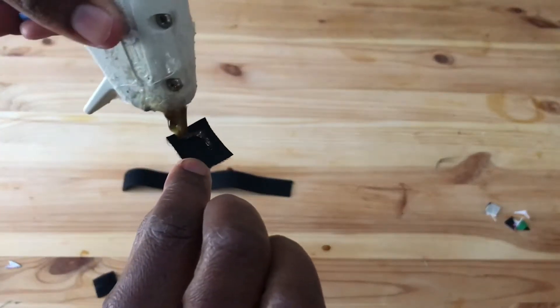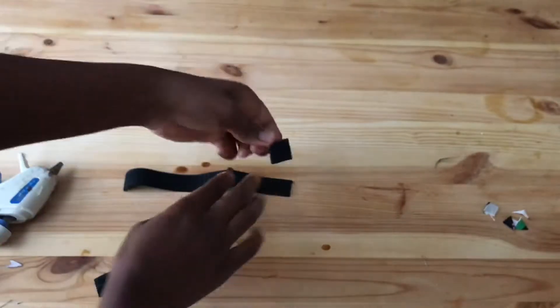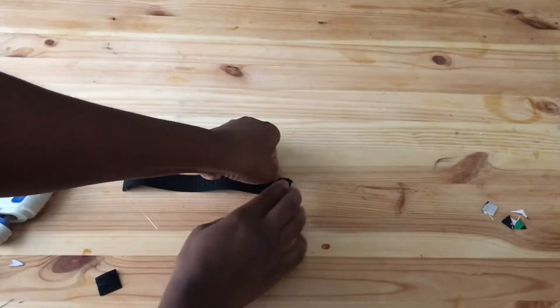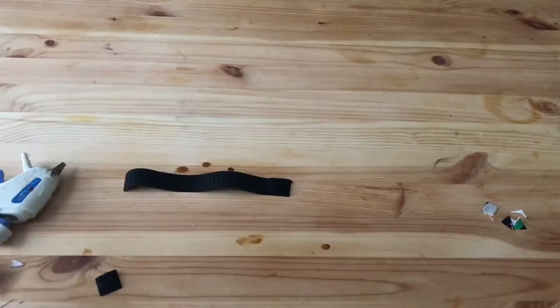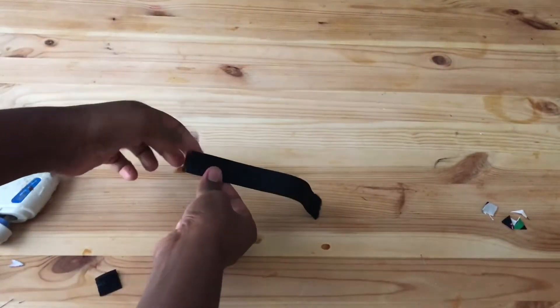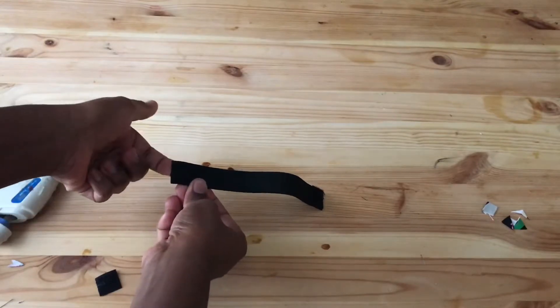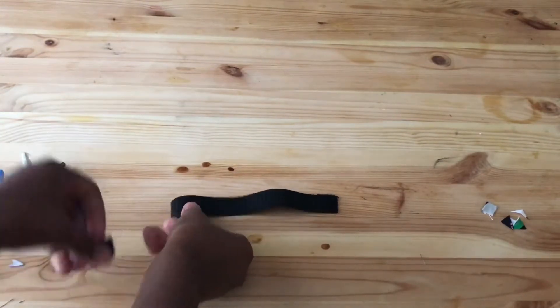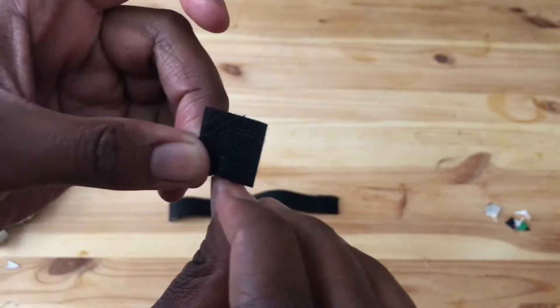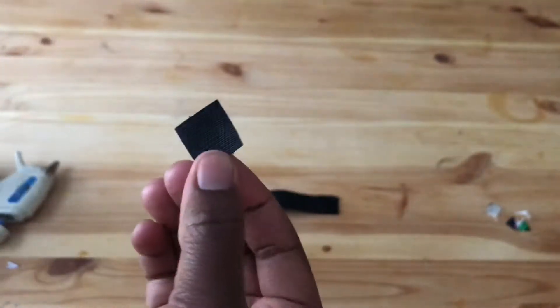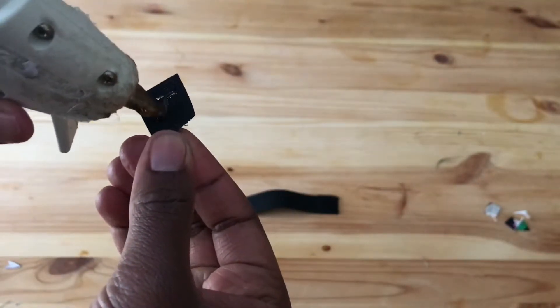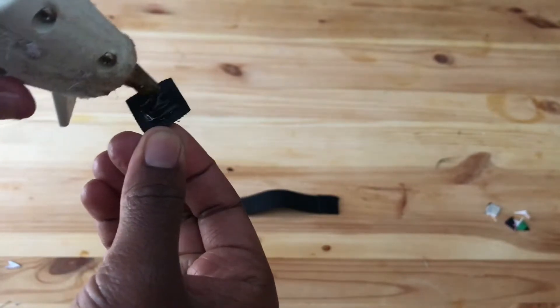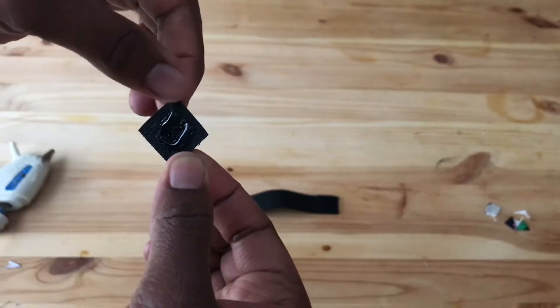On the right side, so on the left side of the elastic on the back side, we are going to take our velcro piece, the other side, and then we're going to take a little bit of hot glue and put it on the back side of the elastic.